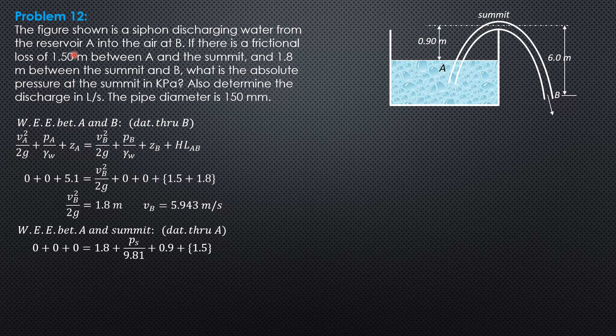So pressure at the summit is negative 41.2 kilopascals. The absolute pressure at the summit is gauge pressure negative 41.2 plus atmospheric pressure, which we should assume standard 101.3, so negative 41.2 plus 101.3. The absolute pressure at the summit is 60.10 kilopascals absolute.